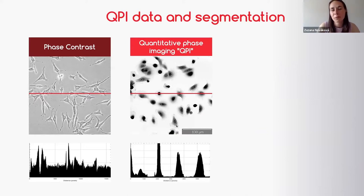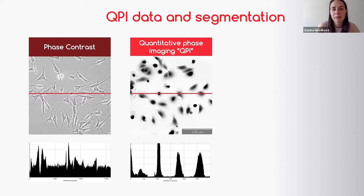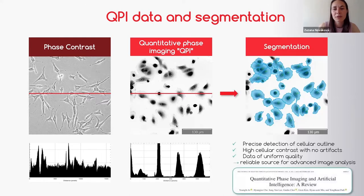There is something more about this image — the background of such image is really flat. As you can see from the lines displaying the profile of such image compared to the phase contrast method, which suffers from white halo artifacts around cells, the background in the QPI image is really flat. Therefore these data are great for image analysis, because you can easily not only discriminate background and objects, but also easily segment the objects.